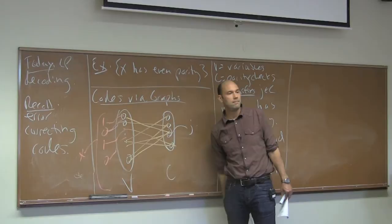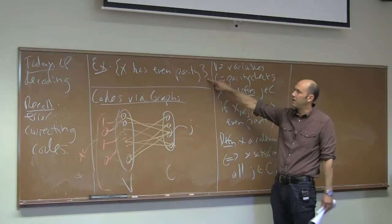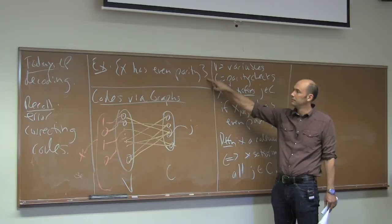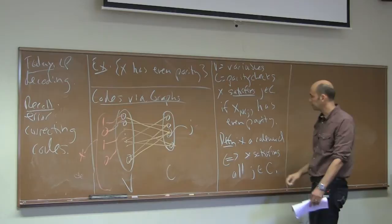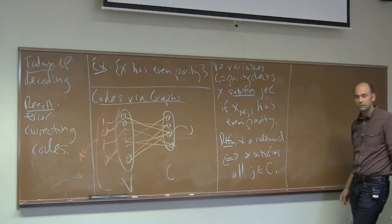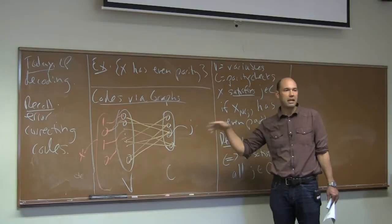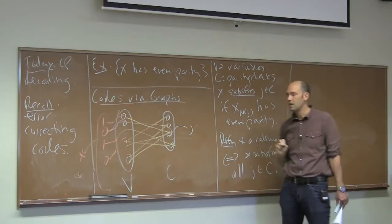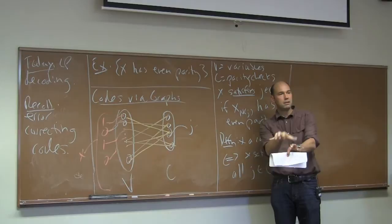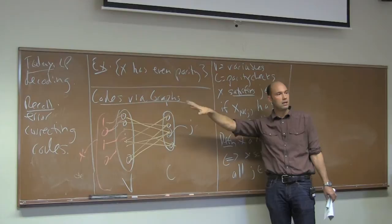In general, throughout this lecture, think of these graphs as being sparse — each parity check involves maybe a random subset of 20 variables, and each variable is involved in maybe 10 different parity checks. So it's a sparse bipartite graph. There will be lots of parity checks, and they will overlap in their variables. Any bipartite graph, without any further assumptions, induces a code — it's exactly the subset which satisfies all the parity checks. But to have a good code, we need to think about what kinds of graphs lead to good codes.